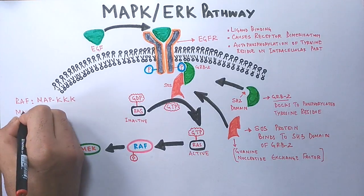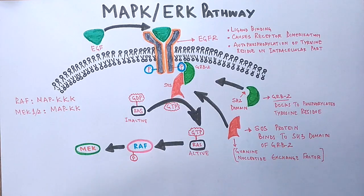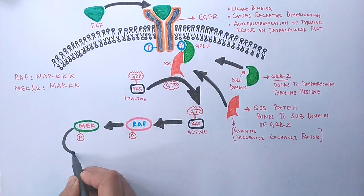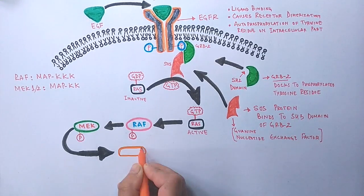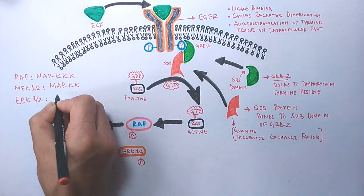The MEK is also named as MAPKK, that's MAP kinase kinase. And finally, MEK targets and phosphorylates the final molecule, that is ERK1/2, also named as MAPK, a single kinase.